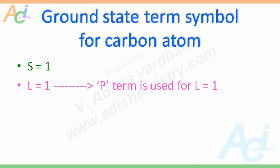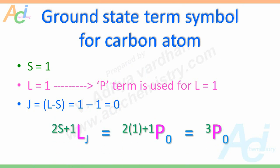Now let us write the S, L, and J values obtained for the carbon atom: S equals 1, L equals 1 (represented by the term P), and J equals 0. So we write the term symbol as 2S+1LJ. Since S equals 1, 2S+1 equals 3. Since L equals 1 we write the term P, and J equals 0. So the ground state term symbol for carbon atom is 3P₀, or triplet P zero.